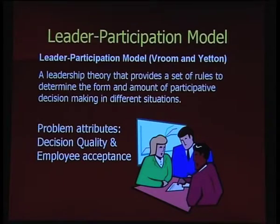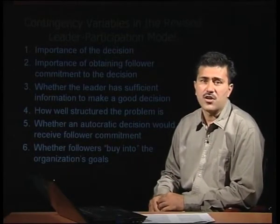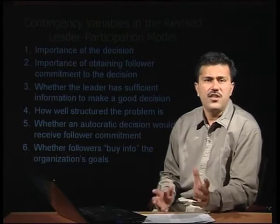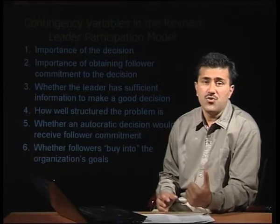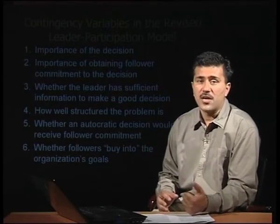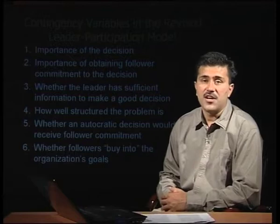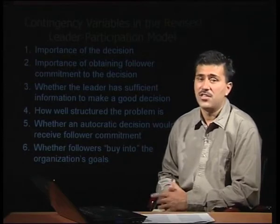These are the contingency variables in the revised leadership participation model by Vroom and Yetton. Before giving autonomy to subordinates, a leader must evaluate several points. First: the importance of the decision for the institution. Second: the importance of obtaining follower commitment to the decision — whether followers are committed to following through.